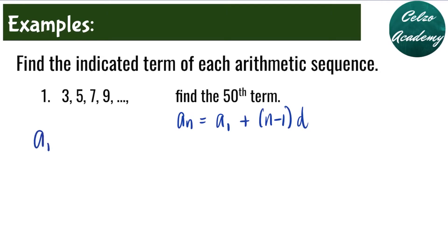From the given sequence, our first term is 3, second term is 5, third term is 7, and fourth term is 9. The value of d, or the common difference, is 2. This can be obtained by subtracting the second term minus the first term: 5 minus 3 equals 2, or 7 minus 5, or 9 minus 7 — all give a common difference of 2. So the common difference is plus 2 because that's the pattern; we're adding 2 to find the next term.